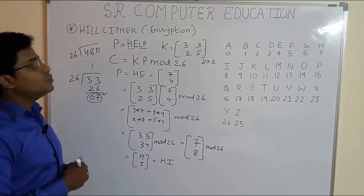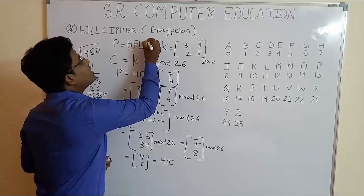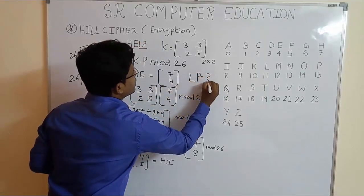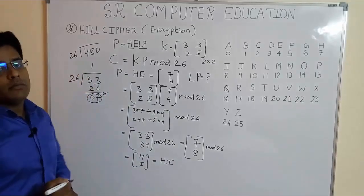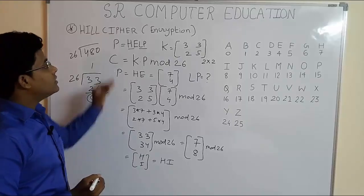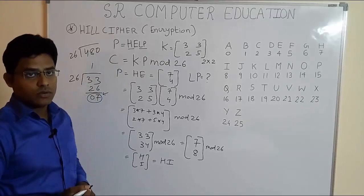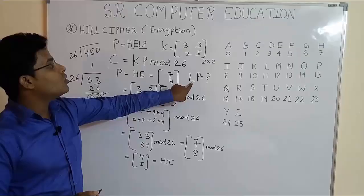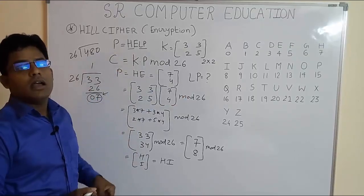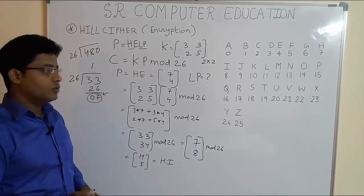So the ciphertext for plaintext HE is HI using Hill cipher technique. Now students, I want you to find ciphertext of plaintext LP and comment below this video so that you are sure that this method is understood by you. So let me know what is the ciphertext of LP using this same method and comment the answer below this video.